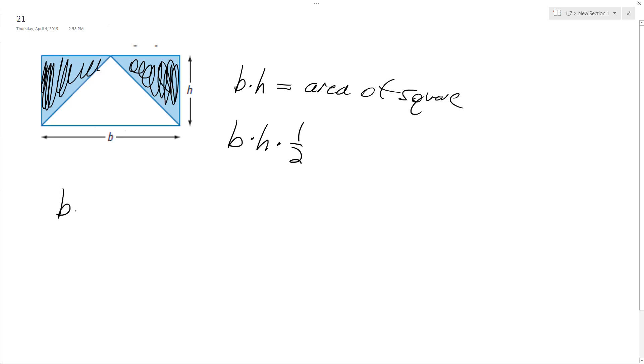So basically we're taking base times height minus one-half base times height. Subtracting one-half of the whole is going to equal one-half. So the area of the shaded region is just going to be one-half the base times the height.